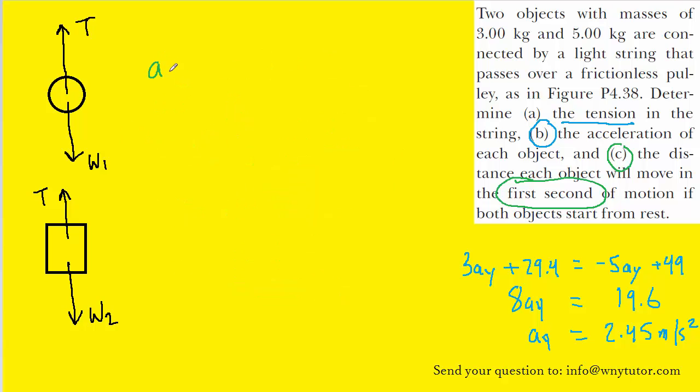Now for that object, we know that its acceleration is positive 2.45. We know that the object is starting from rest because it's stated in the question, which means that the initial velocity of the object is zero. We know the time that the object is traveling is one second, as stated in the question. And we are asked to calculate the displacement of that object during that one second.